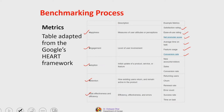Adoption, meaning initial uptake of a product, service, or feature, can be measured from new accounts or visitors, amount of sales, and conversion rate. Retention — how existing users return and remain active — can be measured from returning users, churn, and renewal rate. Task effectiveness and efficiency — measuring efficiency, effectiveness, and errors — can be measured using error count, success rate, and time on task.